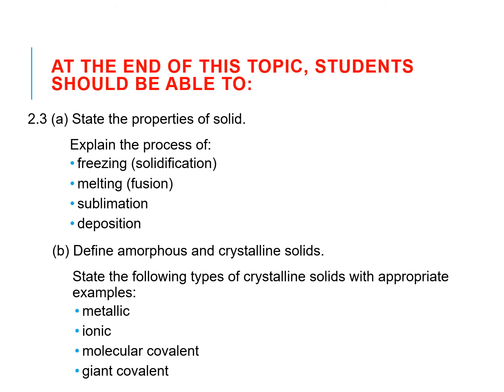By stating the properties of solid, we should be able to explain the process of freezing, melting, sublimation and deposition. We also should be able to define amorphous and crystalline solids by stating the types of crystalline solids with appropriate examples. The solids are metallic, ionic, molecular covalent, and giant covalent solid.